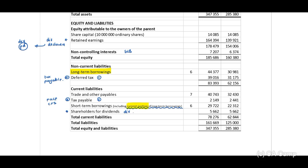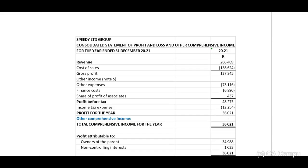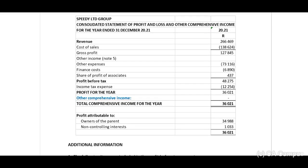Now let's look at the consolidated statement of profit and loss for 2021, also in millions. We have revenue, cost of sales, gross profit, other income, other expenses, share of profit of associates, profit before tax, and income tax expense which we reconcile to our tax payable account. Profit for the year, other comprehensive income zero. Profit is attributable to the owners of the parent and to our non-controlling interest. If you had to reconcile your retained earnings account, you will transfer the profit.